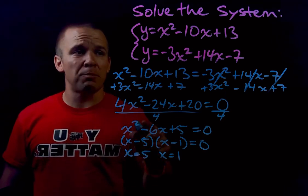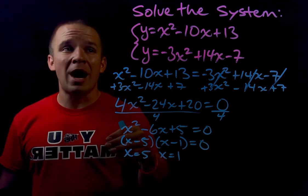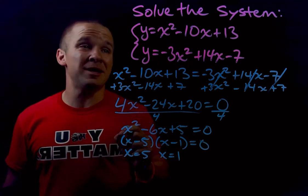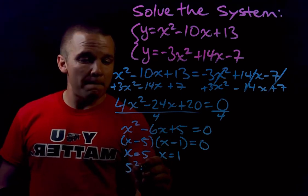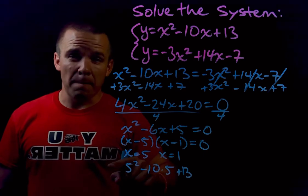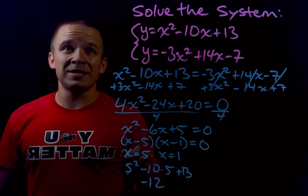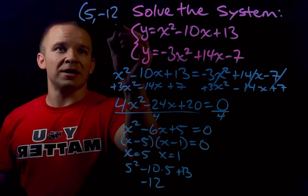All right. So I can plug into either equation this x value and I'll get my y. I'm gonna use the first one because it's easier to work with. 5 squared is 25 minus 10 times 5 plus 13. If I add all that up, I get negative 12. So one of my solutions is (5, -12).